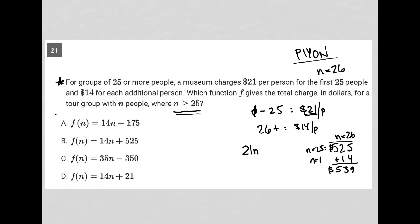So which one of these answer choices, when n equals 26, do I get a value of $539? That's how we use plug in your own number as a strategy. So for choice A, 14 times 26 is 364 plus 175. That's equal to $539. So I like that as an answer. But I'm going to try the others as well.